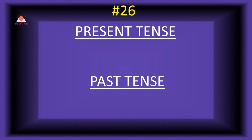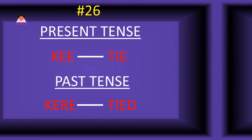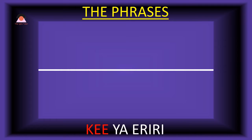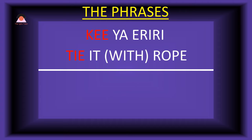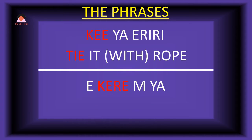Word number twenty-six: 'ke,' meaning 'tie.' The past tense of ke is 'kere,' also meaning 'tied.' Present tense phrase: 'ke ya eriri' — tie it with rope. Past tense: 'e-kere ya' — I tied it.